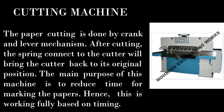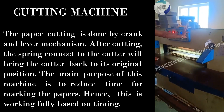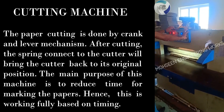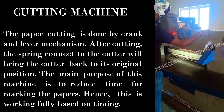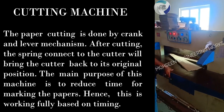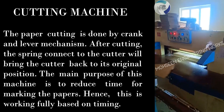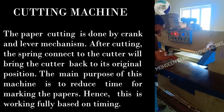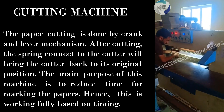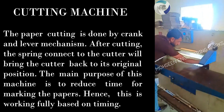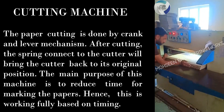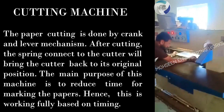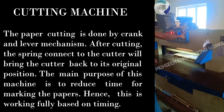Cutting Machine. The paper cutting is done by a crank and lever mechanism. After cutting, the spring connected to the cutter will bring the cutter back to its original position. The main purpose of this machine is to reduce time for marking the papers. This machine works fully based on timing.